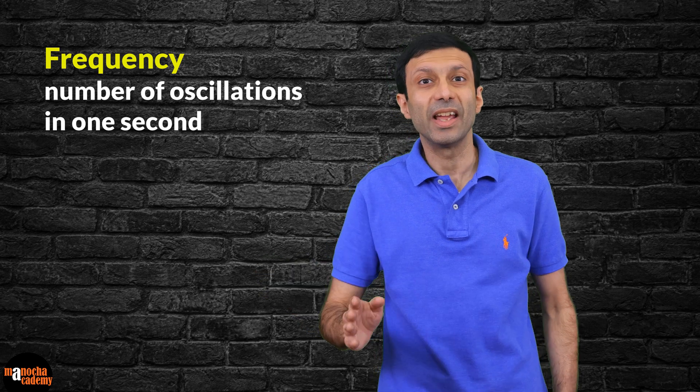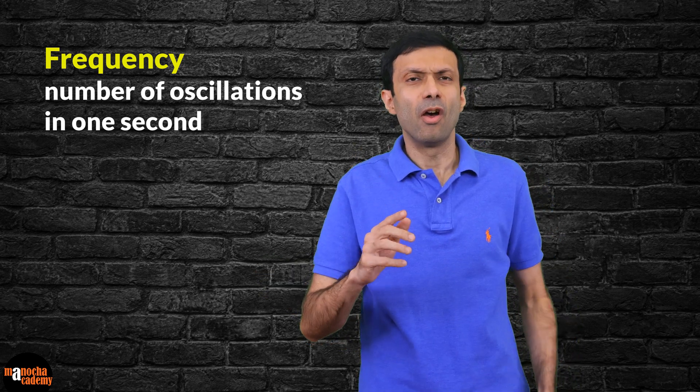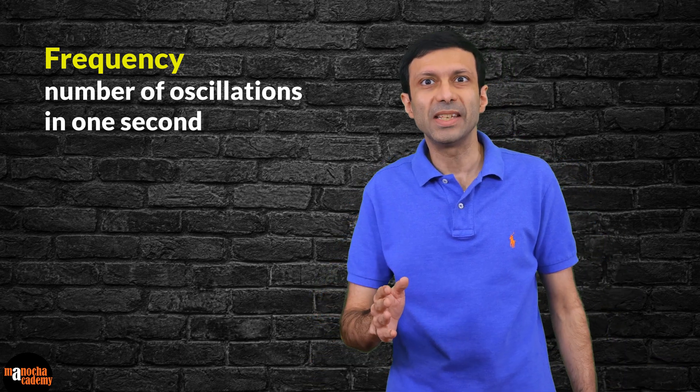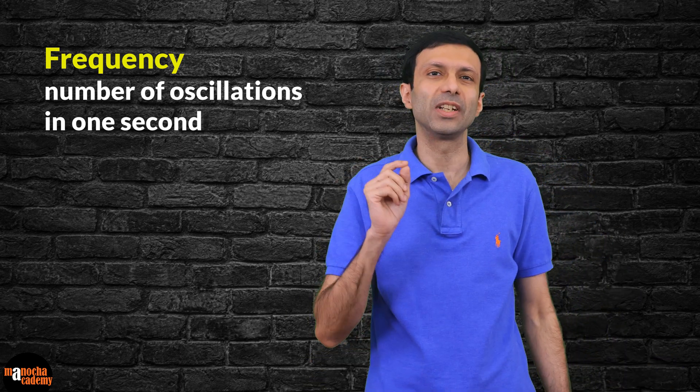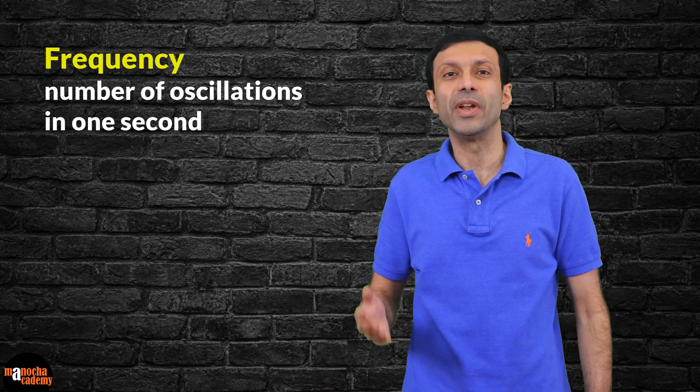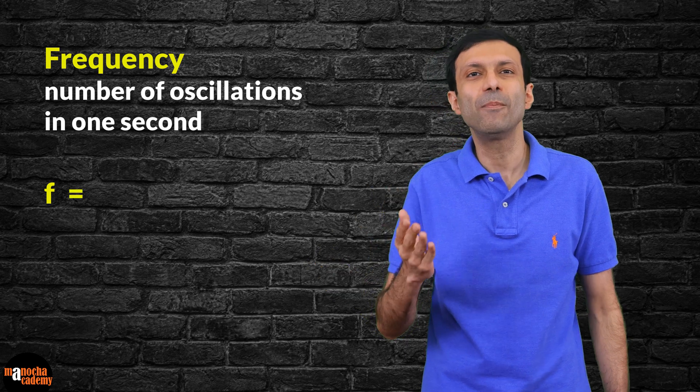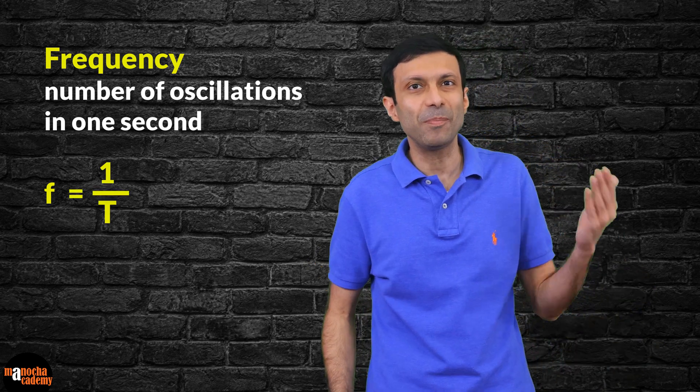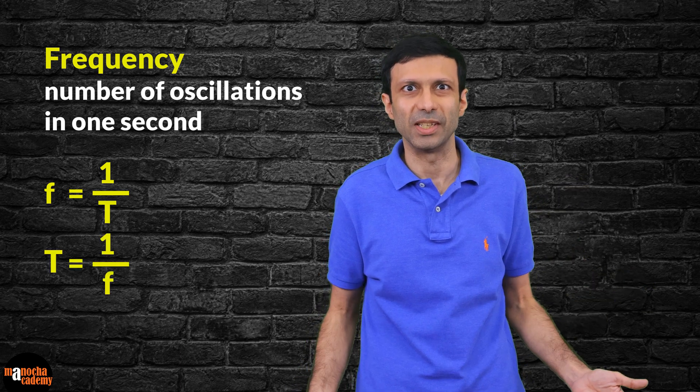Frequency and time period are reverse of each other, so frequency is the reciprocal of the time period. What's the formula going to be? Frequency f is 1 by T, where T is the time period. Or we can write time period T is 1 by f, the frequency.